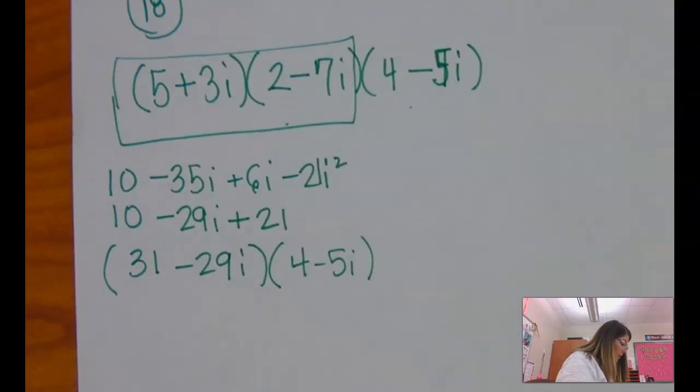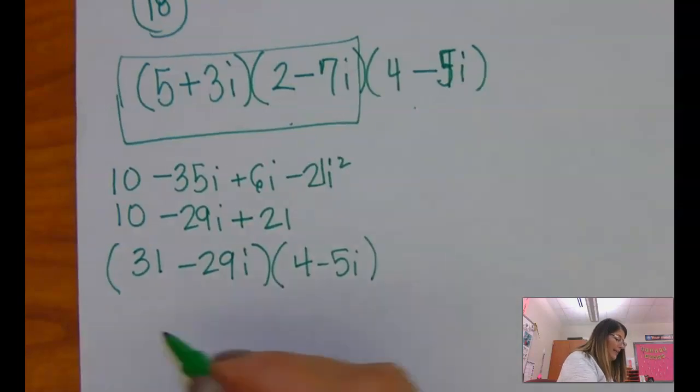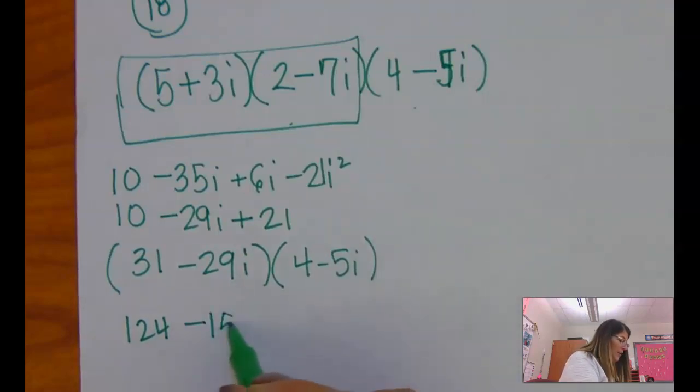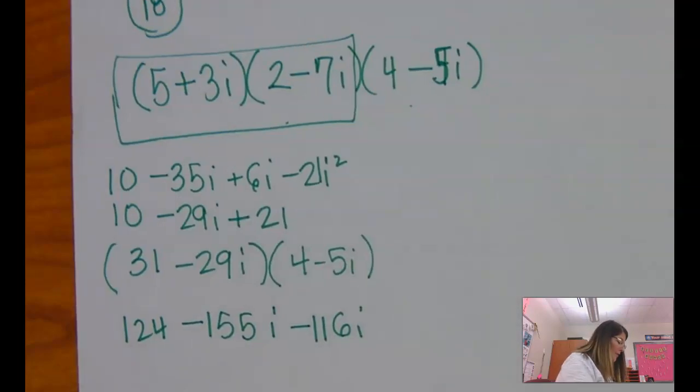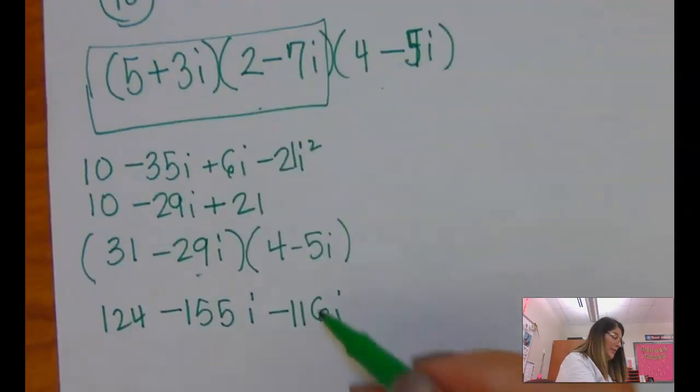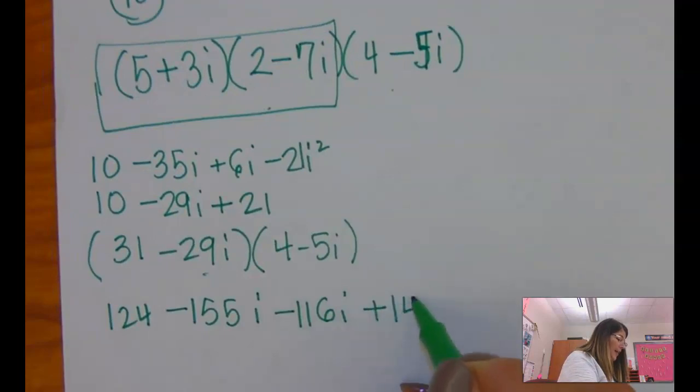So now I'm going to 31 times 4 is 124. 31 times 5 is minus 155i. 29 times 4 is going to be minus 116i. And 29 times 5, as I'm doing the last terms, is plus 145i squared.